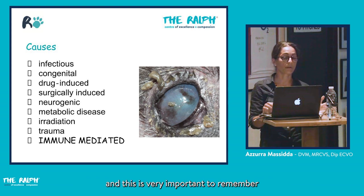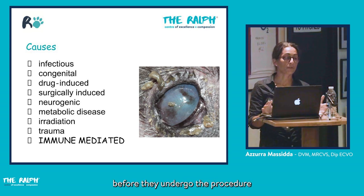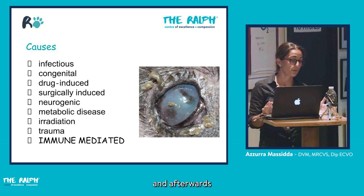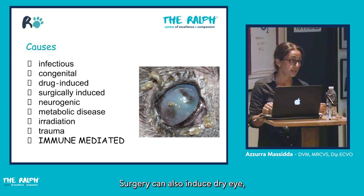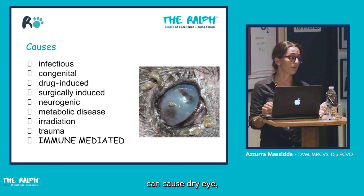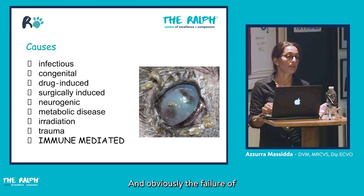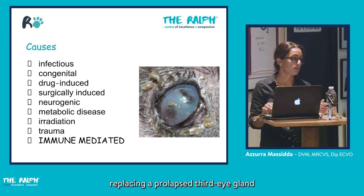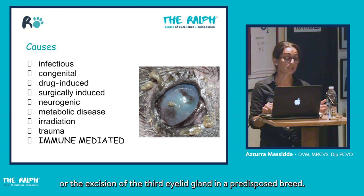It is very important to remember this for surgical patients — you want to make sure the ocular surface is well lubricated before and after a procedure to avoid the risk of developing ocular surface ulceration. Surgery can also induce dry eye, including cataract surgery, evisceration, intrascleral prosthesis, and failure to replace or excision of the prolapsed third eyelid gland in a predisposed breed.